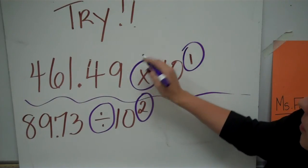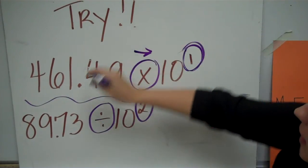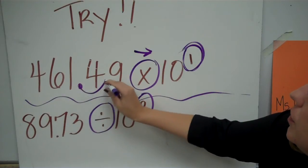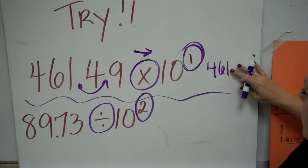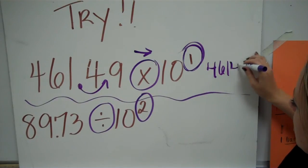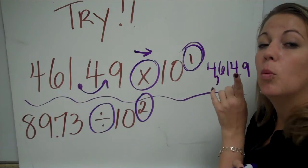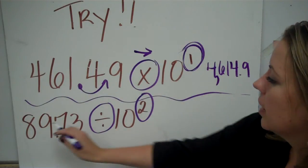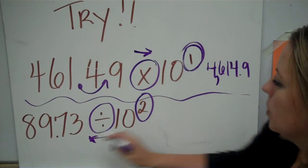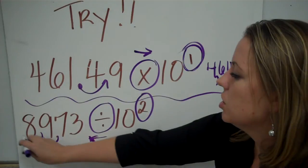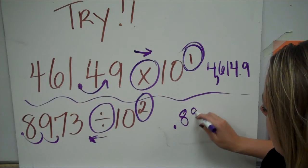Multiplication means you're moving your decimal to the right one time. You pick it up and move it between the four and the nine, so your new answer is four thousand six hundred nineteen point four — make sure you put the comma in. That number grew by one power of ten. For the second problem, you're dividing, so you move to the left two times — one, two — and now the decimal sits in front of the eight. That gives you 0.8973.